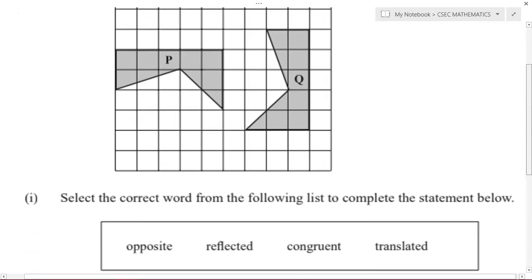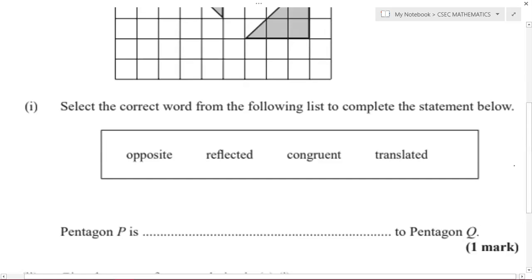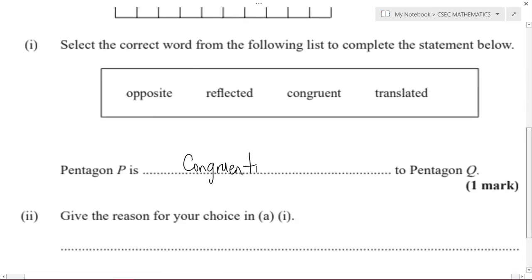Well, the answer here is that Pentagon P is congruent to Pentagon Q. Pentagon P is congruent to Pentagon Q.